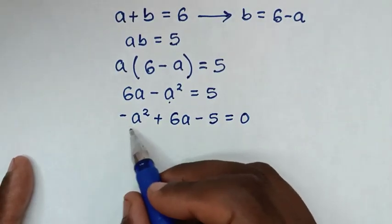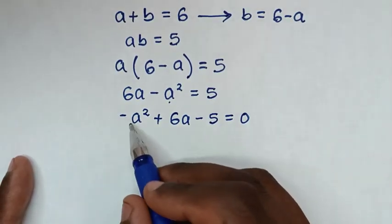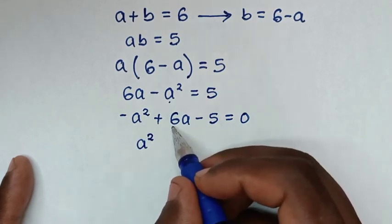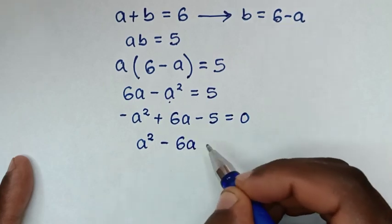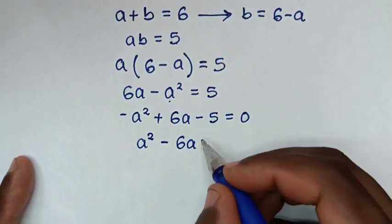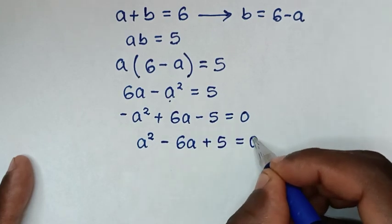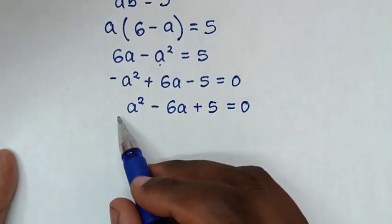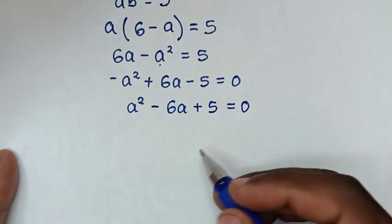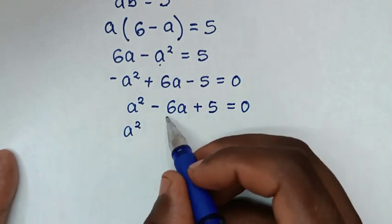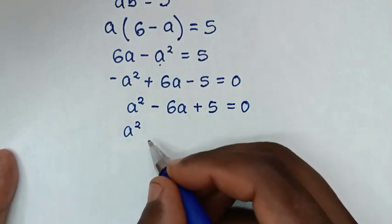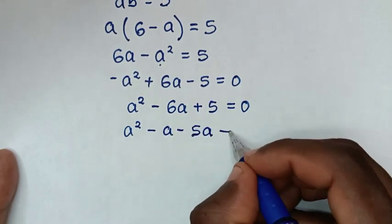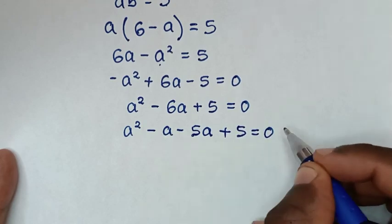We multiply the whole equation by negative 1. Negative times negative a squared gives positive a squared; negative times positive 6a gives negative 6a; and negative times negative 5 gives positive 5, so a squared minus 6a plus 5 equals 0. This quadratic equation can be solved by grouping and factorization. We split negative 6a as negative a minus 5a, giving a squared minus a minus 5a plus 5 equals 0.